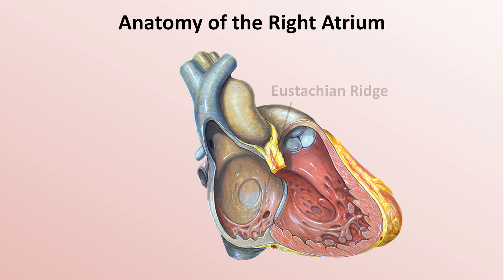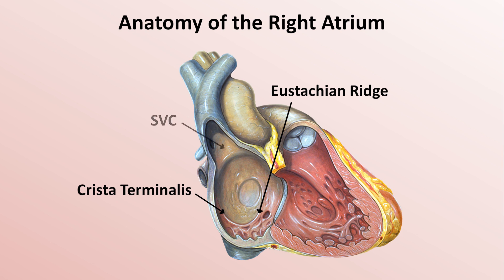Separating these two halves are the eustachian ridge and the crista terminalis. The endocardial surface of the right atrium has several orifices which can serve as anatomic barriers to electrical conduction. The most notable of these are the superior vena cava, the inferior vena cava which enters the atrium posterior to the eustachian ridge, and the tricuspid valve which is attached to the tricuspid annulus that comes out of the plane of the screen.